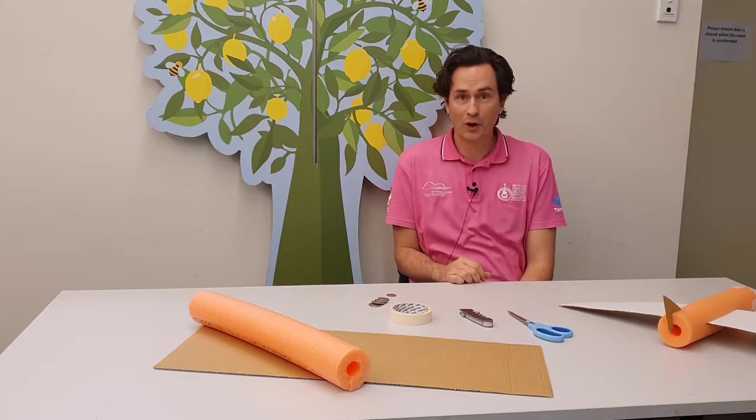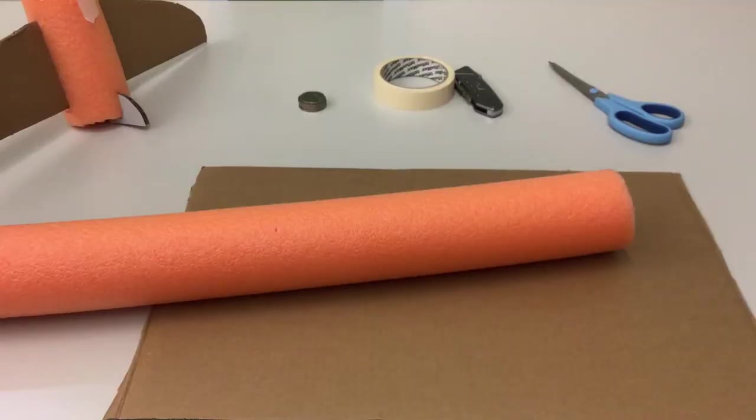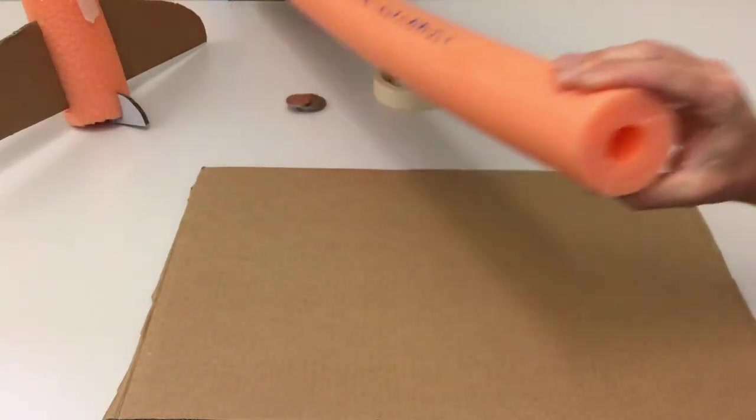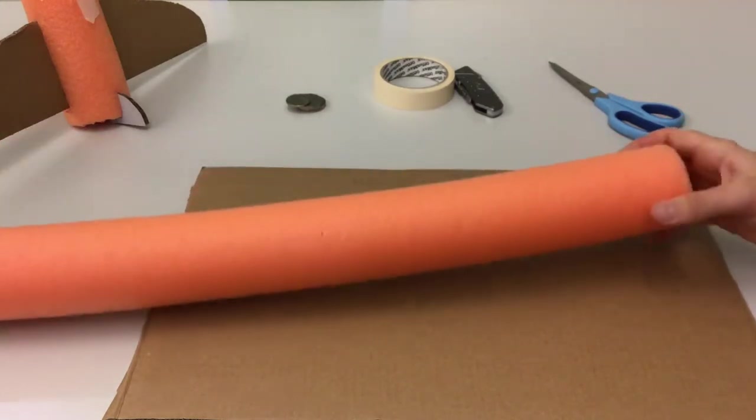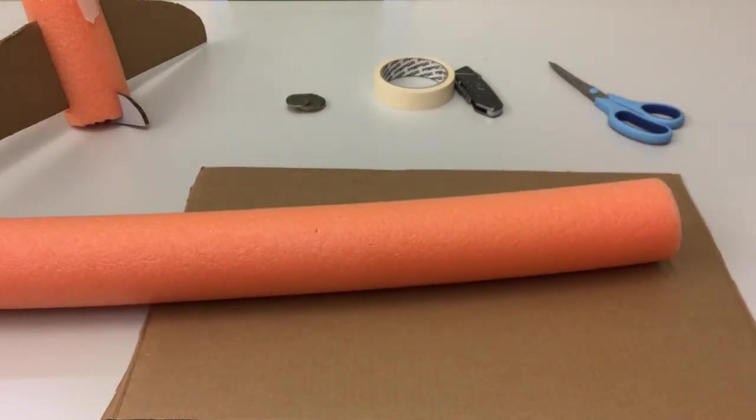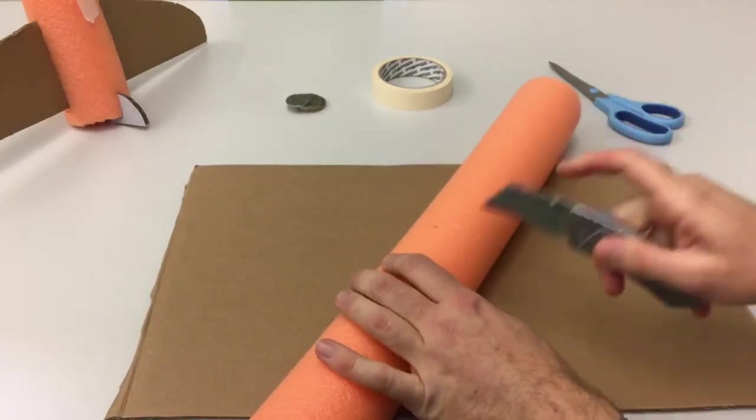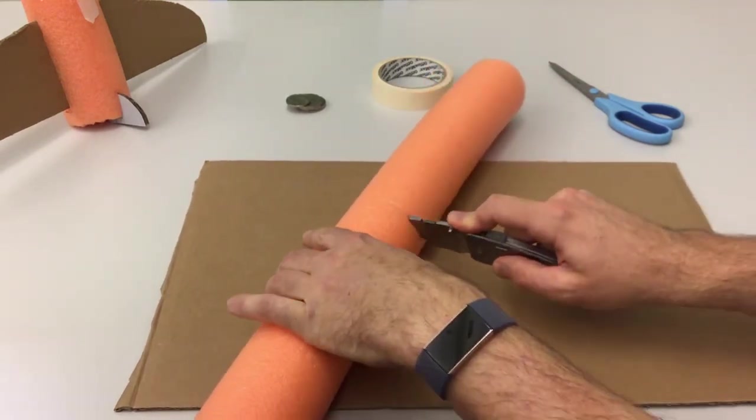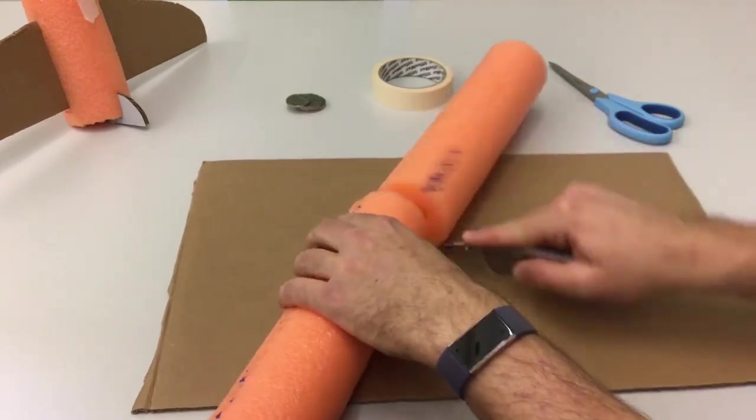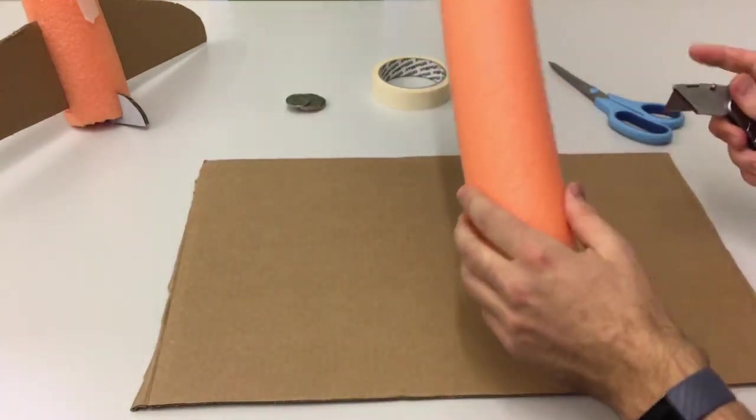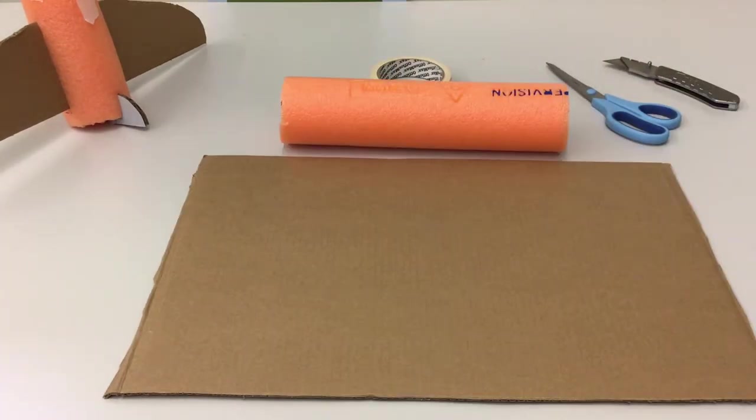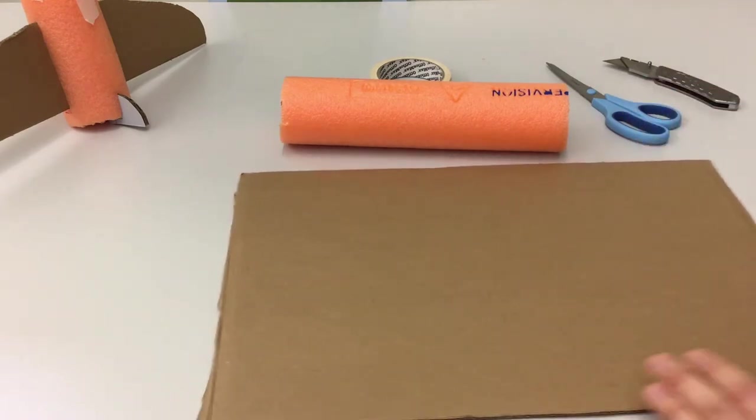The first thing we're going to do is cut our pool noodle to length. This is a hollow pool noodle which will make it easier to cut, but this will still work if you have a solid one - you'll just need a longer knife. Make sure you get a parent to help with this bit because we're using a knife and it can be dangerous. I'm just going to cut this about 30 centimeters.